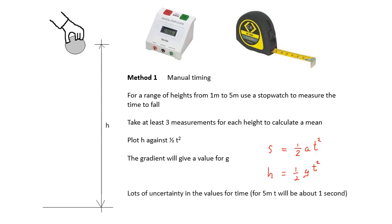There's a lot of uncertainty here. For five meters, the time to fall is about a second, and you're measuring to about plus or minus 0.2 seconds — that's 20% uncertainty. We can reduce this by taking three measurements and averaging. The person with the stopwatch should be the person who lets go of the ball, to minimize reaction time. Nevertheless, this method does give quite a decent answer.